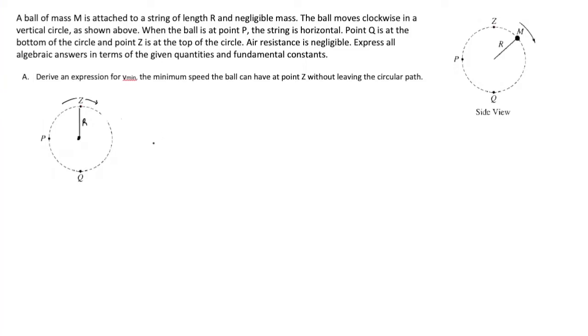Let's begin with part a. Let's derive an expression for the minimum speed the ball will have at point z without leaving the circular path. This being a dynamics problem, let's consider all of the forces that could be in play at that point.